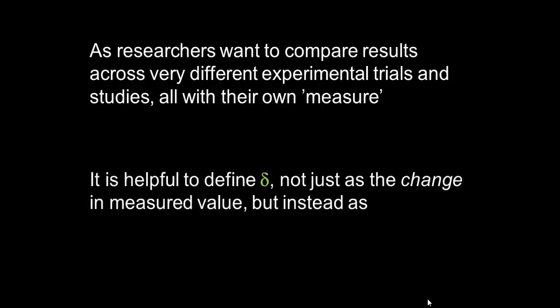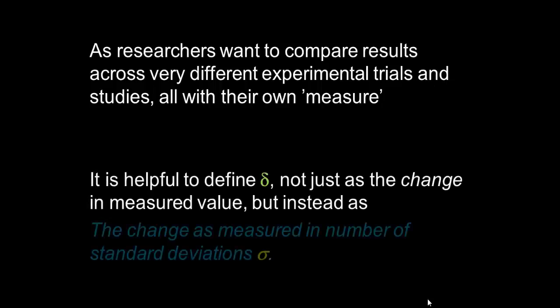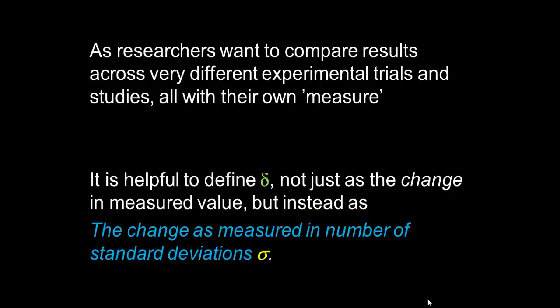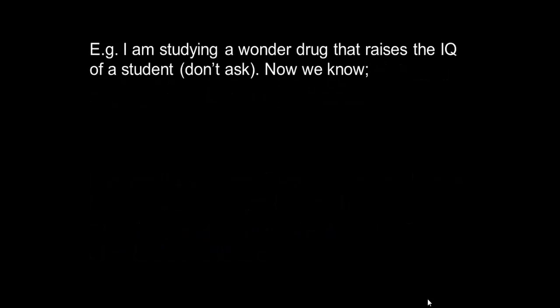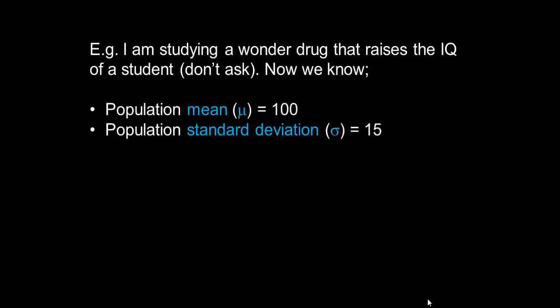So we are defining delta not just as the change in a value but the change as measured in the number of standard deviations, it's a shift. Now this is an agreed standardization of reporting results so that we therefore are in a position to readily compare which results are more effective across different trials. Let's take an example. Imagine I'm studying a wonder drug that raises the IQ of a student. Now we know the population at large has a mean IQ of 100, and in that population at large the standard deviation, the average spread, is 15 IQ points.